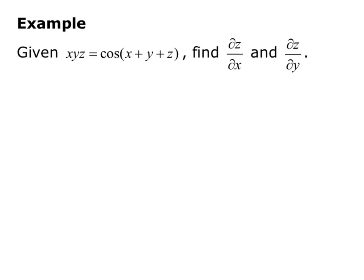Given xyz equals cosine of x plus y plus z, find the partial derivative of z with respect to x and the partial derivative of z with respect to y. First of all, we need to identify F, so we need to make the equation equal zero.